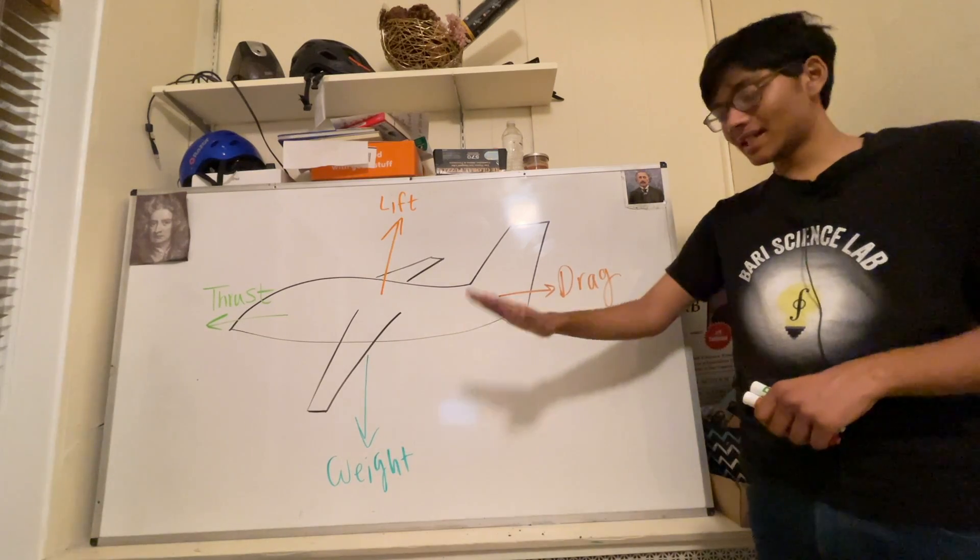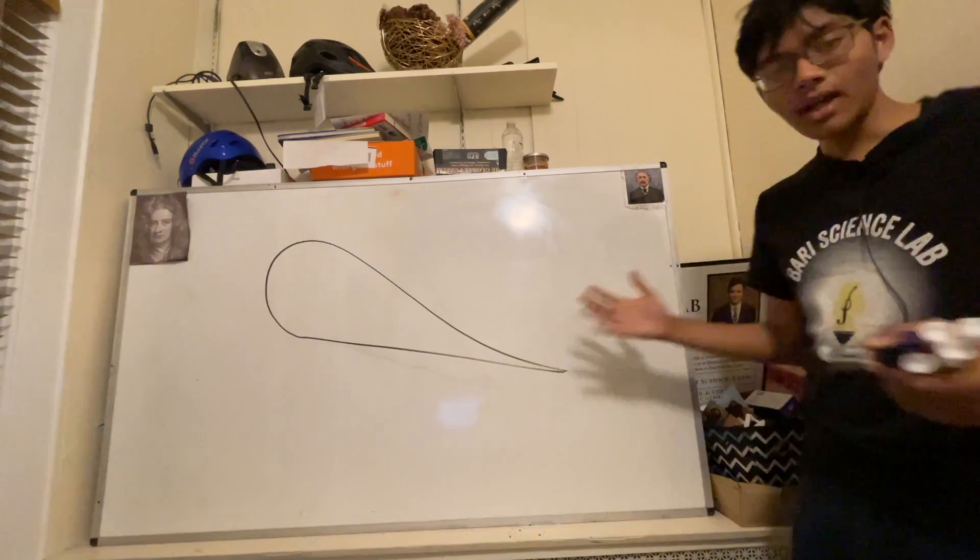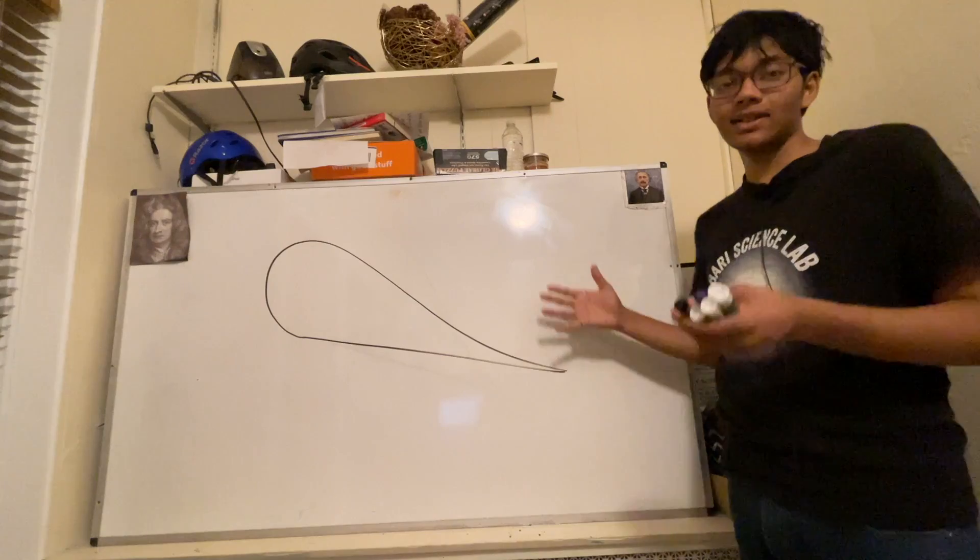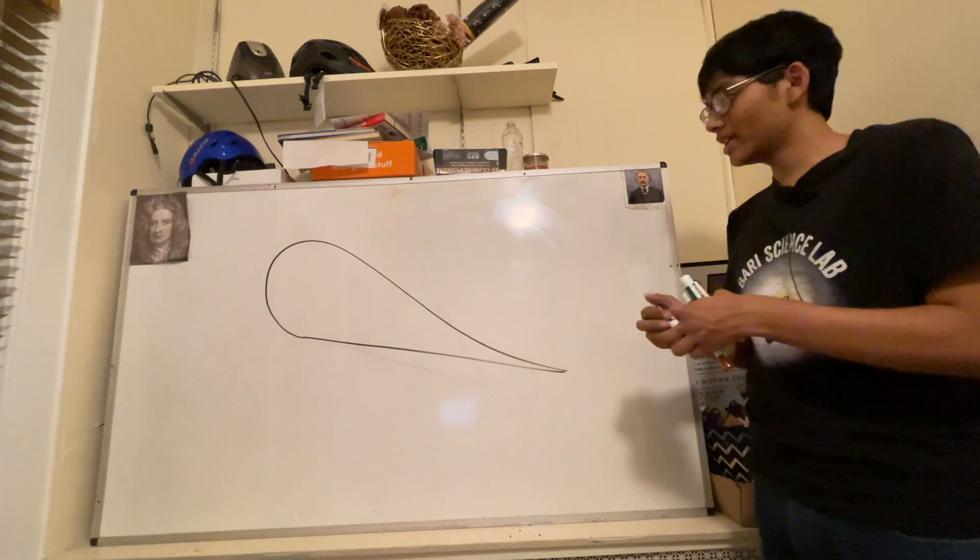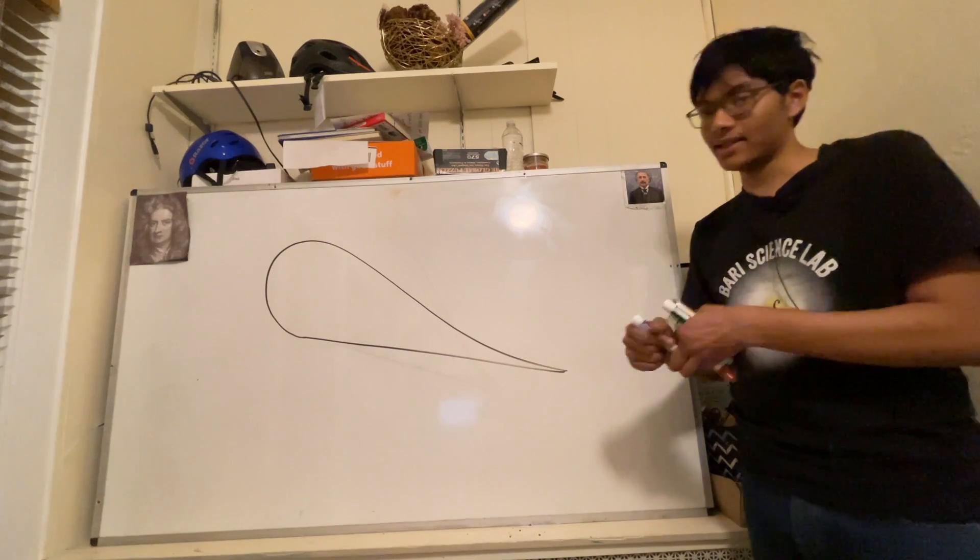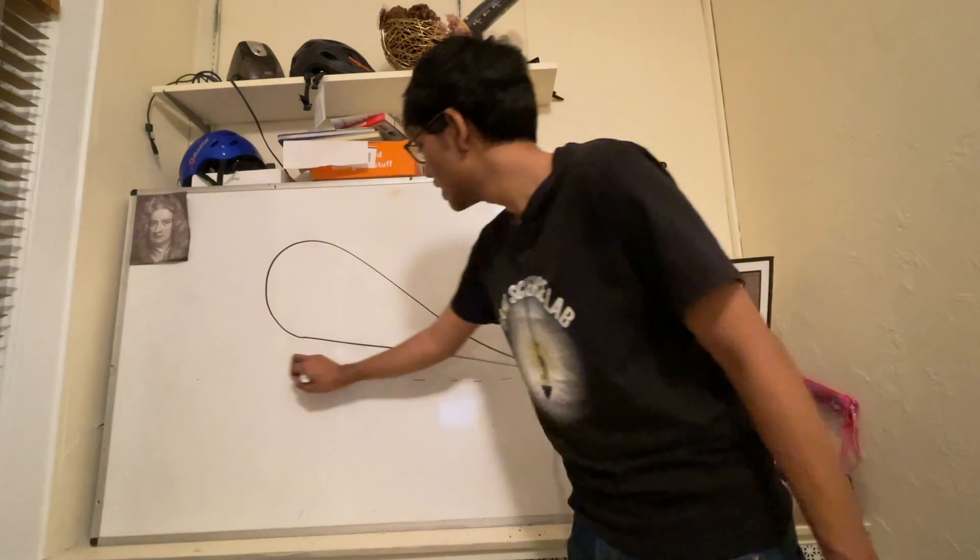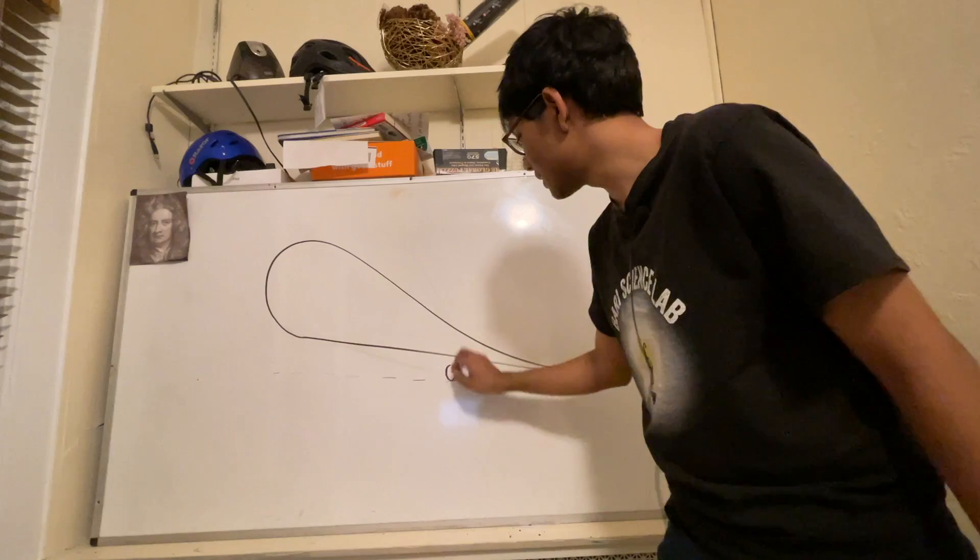But if the plane wants to accelerate, it's gotta tip its nose at an angle of attack. That's a cross-section of an airplane wing. Now, what happens when the airplane wing is tilted at an angle of attack like this? An angle of attack just means that the airplane's nose is pointed up at some angle, let's say theta.